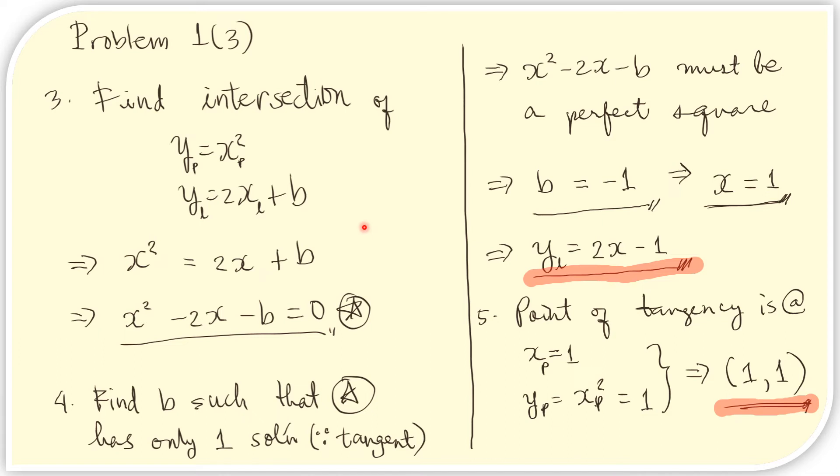To find b, we use the condition that this line y equals 2x plus b is tangent to the parabola, which is y equals x squared. For convenience, we wrote subscripts for the y in the parabola, and for the y in the line. P stands for parabola and L stands for the line.